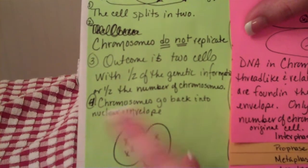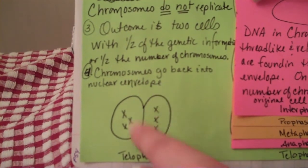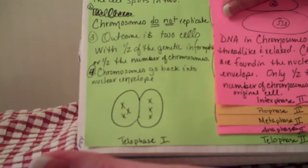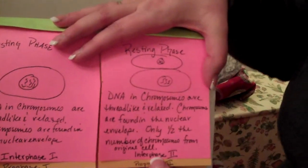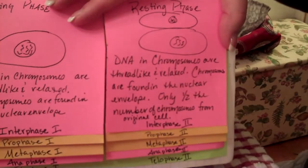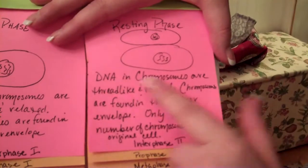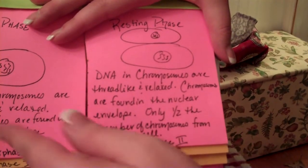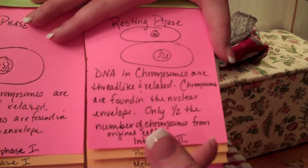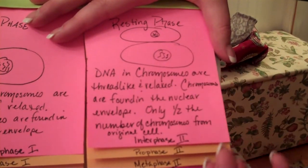The chromosomes go back into their nuclear envelope — this is the end of Meiosis I — and you've got two cells, each with half the genetic information. But we're not done yet. You've got another whole part of your foldable to look at. You go back to Interphase 2. In Interphase 2, you have two cells — they're both in the resting phase. The DNA in the chromosomes are thread-like and relaxed, and the chromosomes are found in the nuclear envelope, but there's only half the number of chromosomes from the original cell.